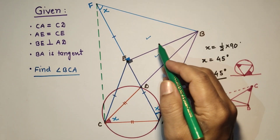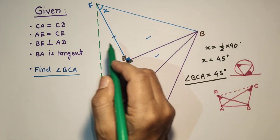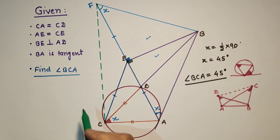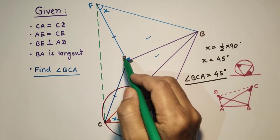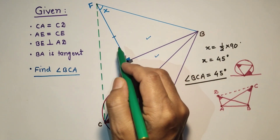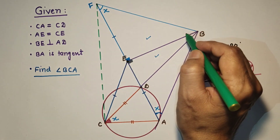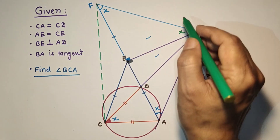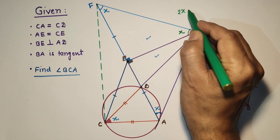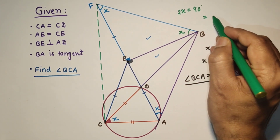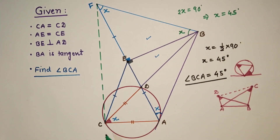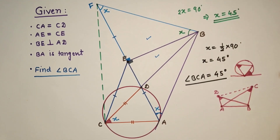We can also verify this another way: since E is the center, EF, EC, EA, and EB are all radii. Since EF equals EB, these two sides are equal, so their base angles are also equal. The angle at E is 90 degrees, so the sum of the two base angles is 90 degrees. Therefore 2X equals 90, giving X equals 45 degrees. Angle BCA equals 45 degrees — that is the answer.